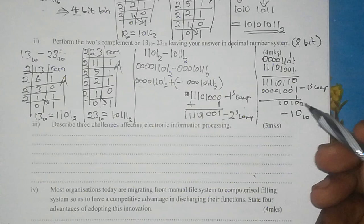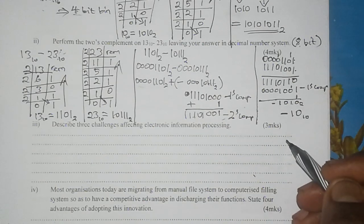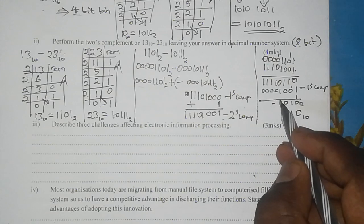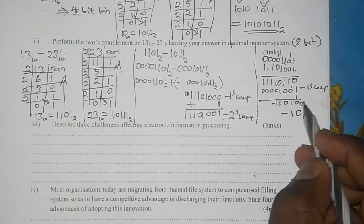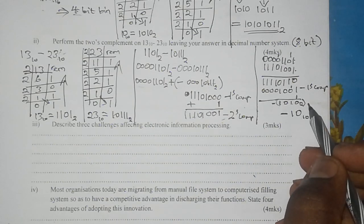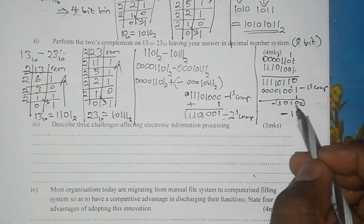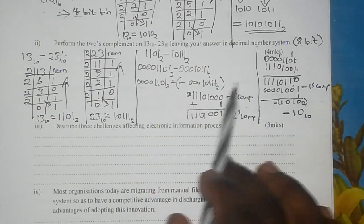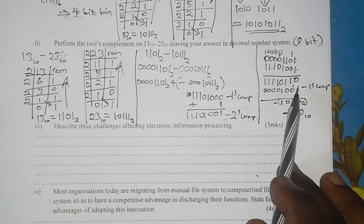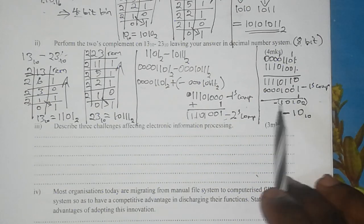Now here we are arriving at a result 1010 base 2, and in this case this is a negative. So being a negative we can now convert 1010 base 2 into decimal and then we'll have a negative sign before it.